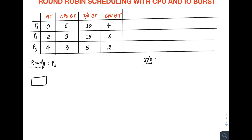The time quantum for this Round Robin example is three units of time. Since there is only one process in the ready queue, let's schedule P1 first. In Round Robin you can schedule a process for at most one time quantum, so P1 runs from 0 to 3.